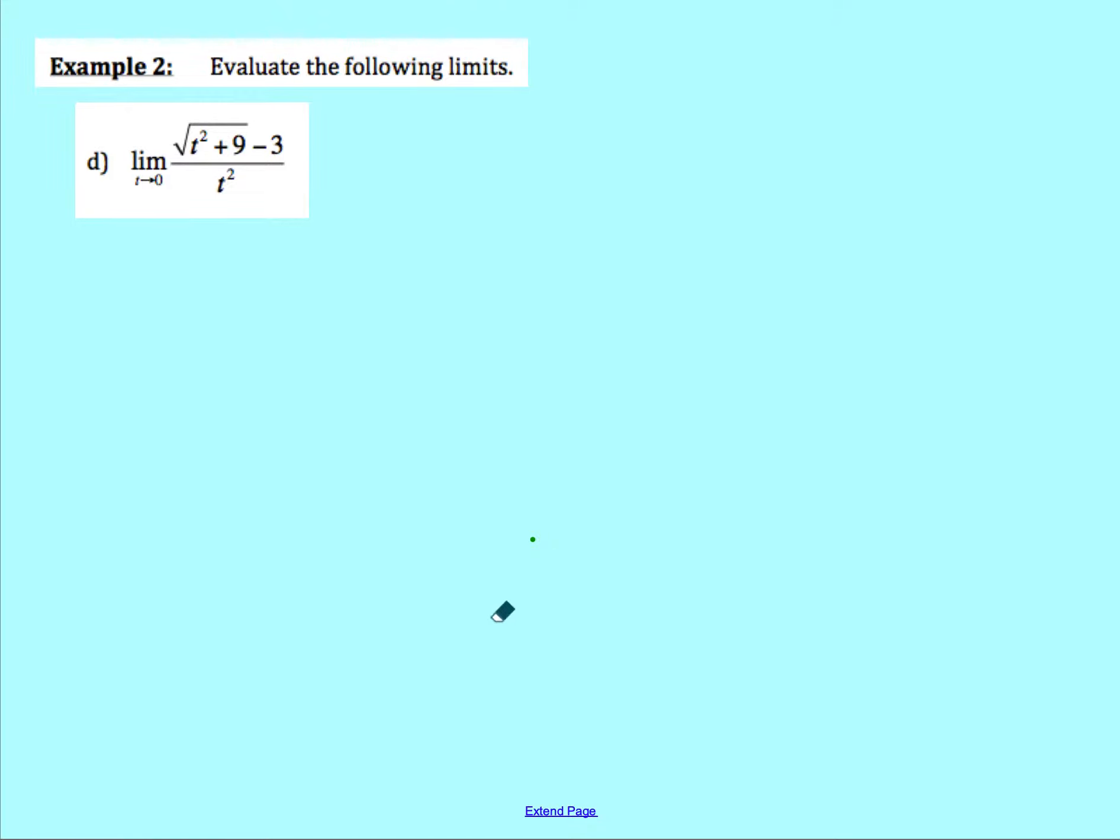Alright, we're going to continue looking at solving limits algebraically. Here's a different one with a square root in it, but the process is still the same. First, I'll try and plug in zero for t. I would check my denominator. If I plug in zero for t, I would have zero squared, which is zero, so I have zero in my denominator, which poses an issue.